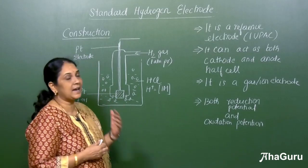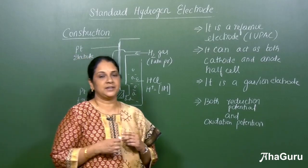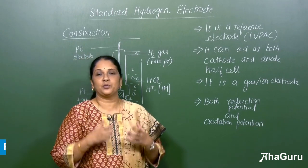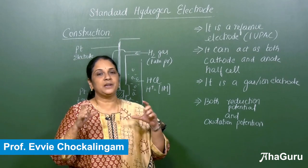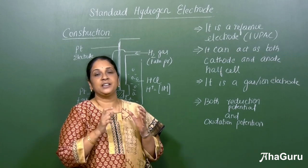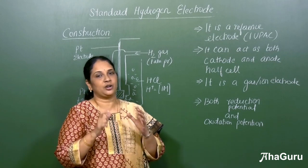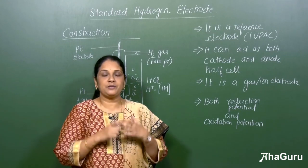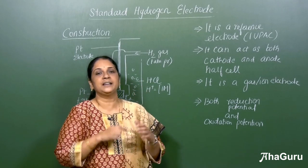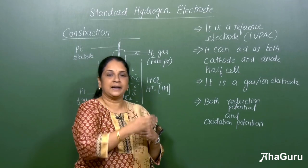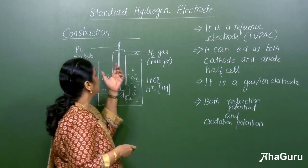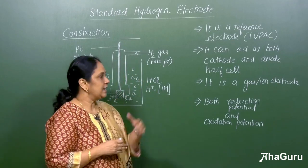Now let us see what is a standard hydrogen electrode. Usually, if we want to find the potential of a cell, there should be two half cells. For an individual half cell, we cannot find the potential independently. If we want to find the individual potential of one half cell, it should be connected to some standard value — for that only we use the standard hydrogen electrode.